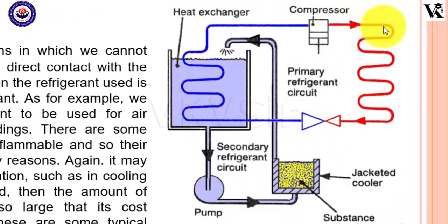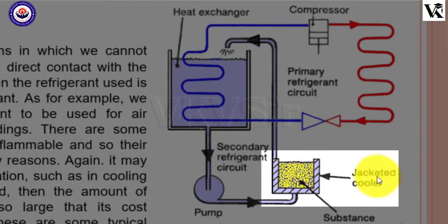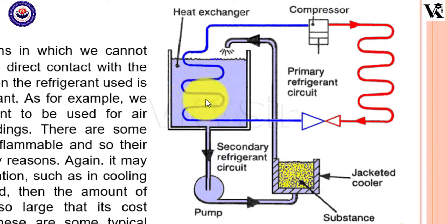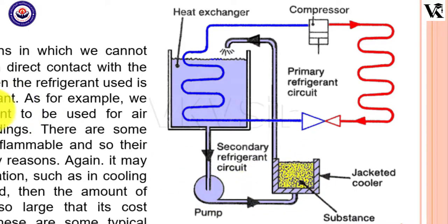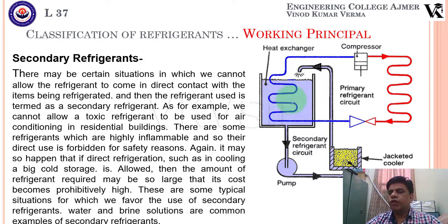So what do we do? In the primary circuit, the primary refrigerants flow and complete the cycle. If they are toxic or flammable, their direct use is forbidden for safety reasons — no poison or toxicity, no flammability in the secondary zone. We keep the toxic or flammable refrigerant in the primary circuit and take another solution like a brine solution to the secondary circuit for cooling.